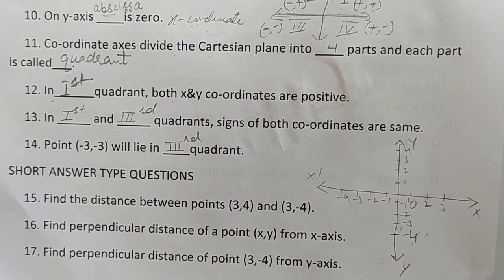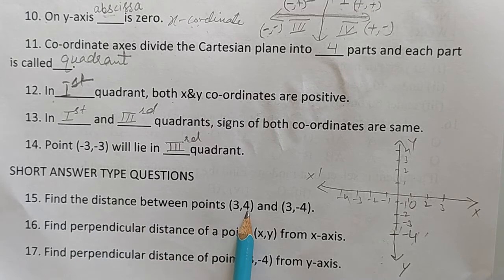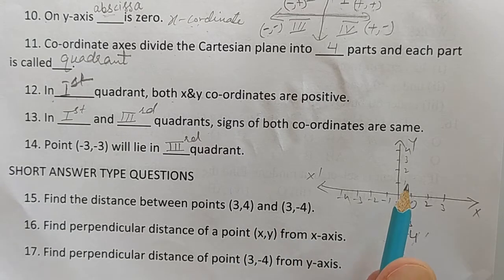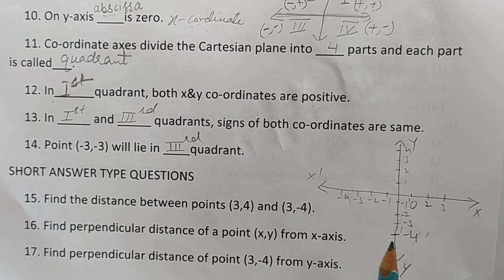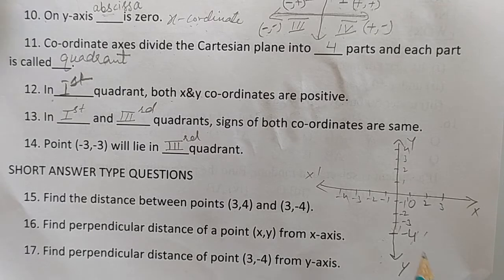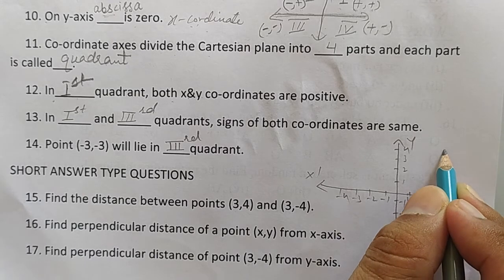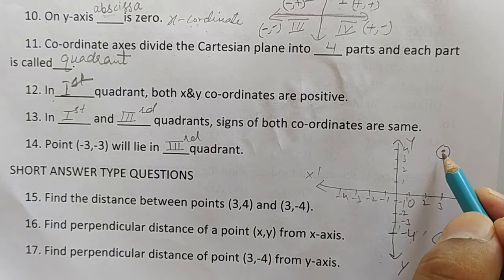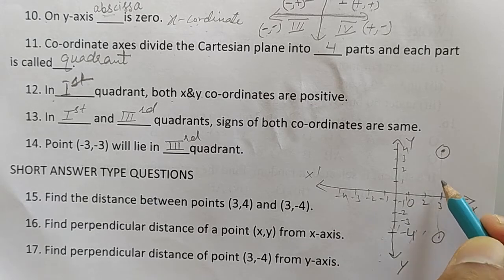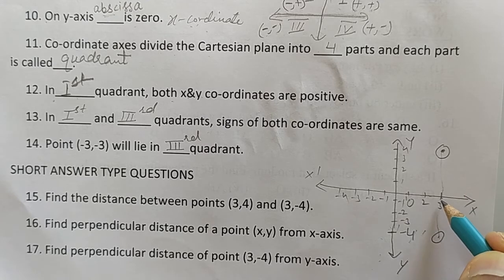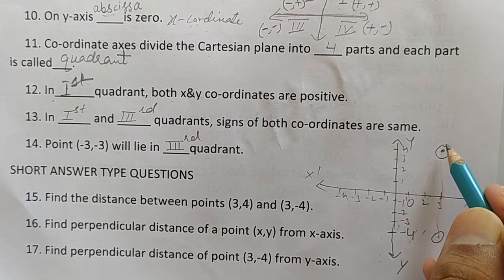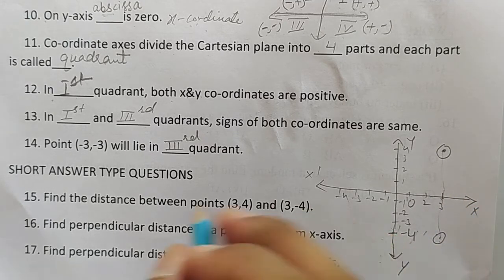Question 15: find the distance between points (3, 4) and (3, −4). Using a graph, point (3,4) is 4 units above the x-axis and (3,−4) is 4 units below. The total distance between them is 4 + 4 = 8 units. Distance is always taken as positive.